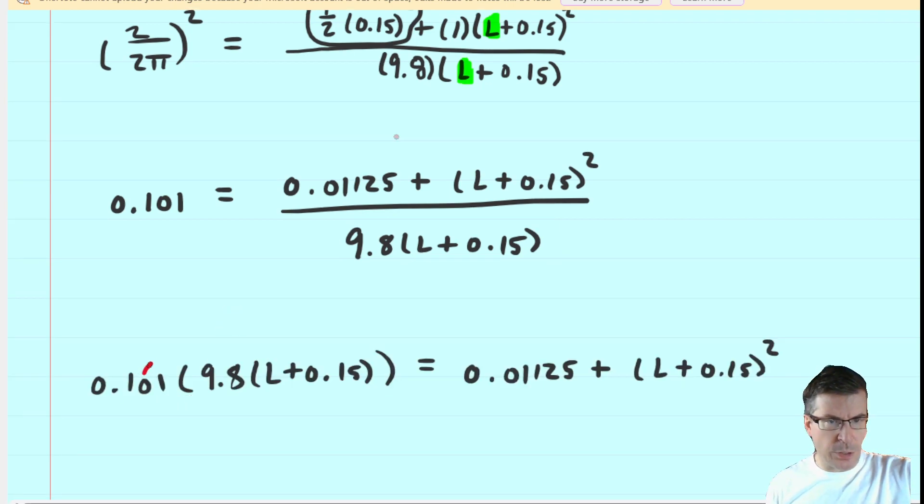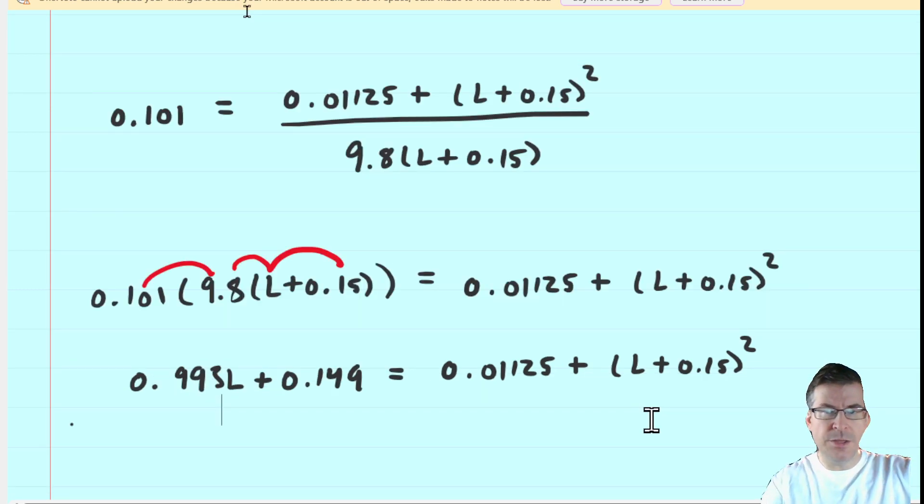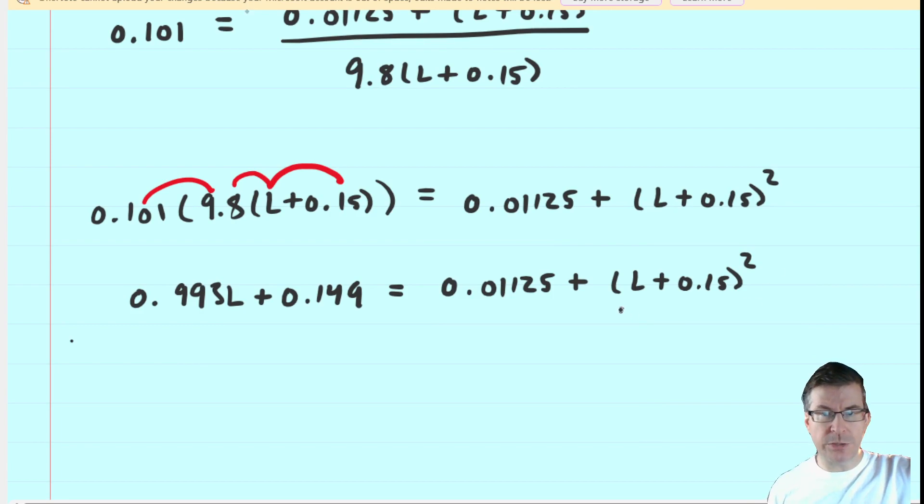We can distribute the point 101 to the 9.8, get that value, and whatever that is, then we will distribute that twice into the parentheses. Next, we will multiply out this term here by writing it twice and foiling.